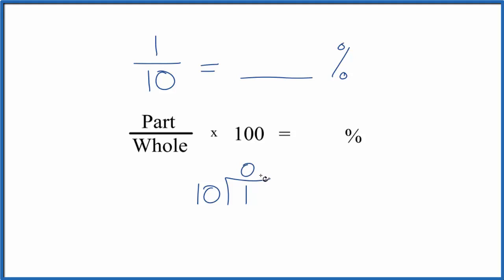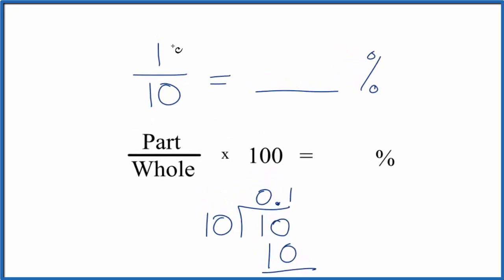Well, it doesn't go into 1, but if we put a decimal here, we could call this 10. 1 times 10, that's 10. So 0.1, that's the decimal for the fraction 1 tenth.